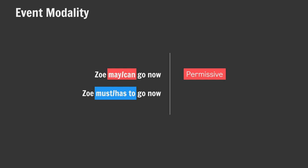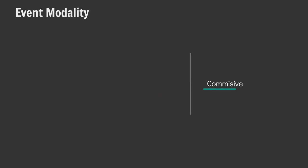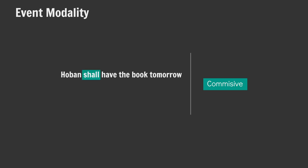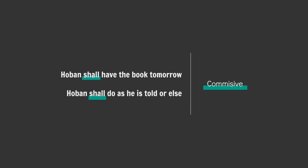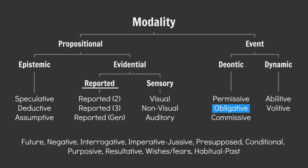Whereas the second suggests that Zoe is obliged to go, and not going would be a bad call on her part — obligative modality. And finally, commissive modality indicates a speaker's commitment to do stuff, usually found in promises or threats: 'Hoban shall have the book tomorrow,' 'Hoban shall do as he's told, or else.' Deontic obligative, deontic permissive, and deontic commissive — done.